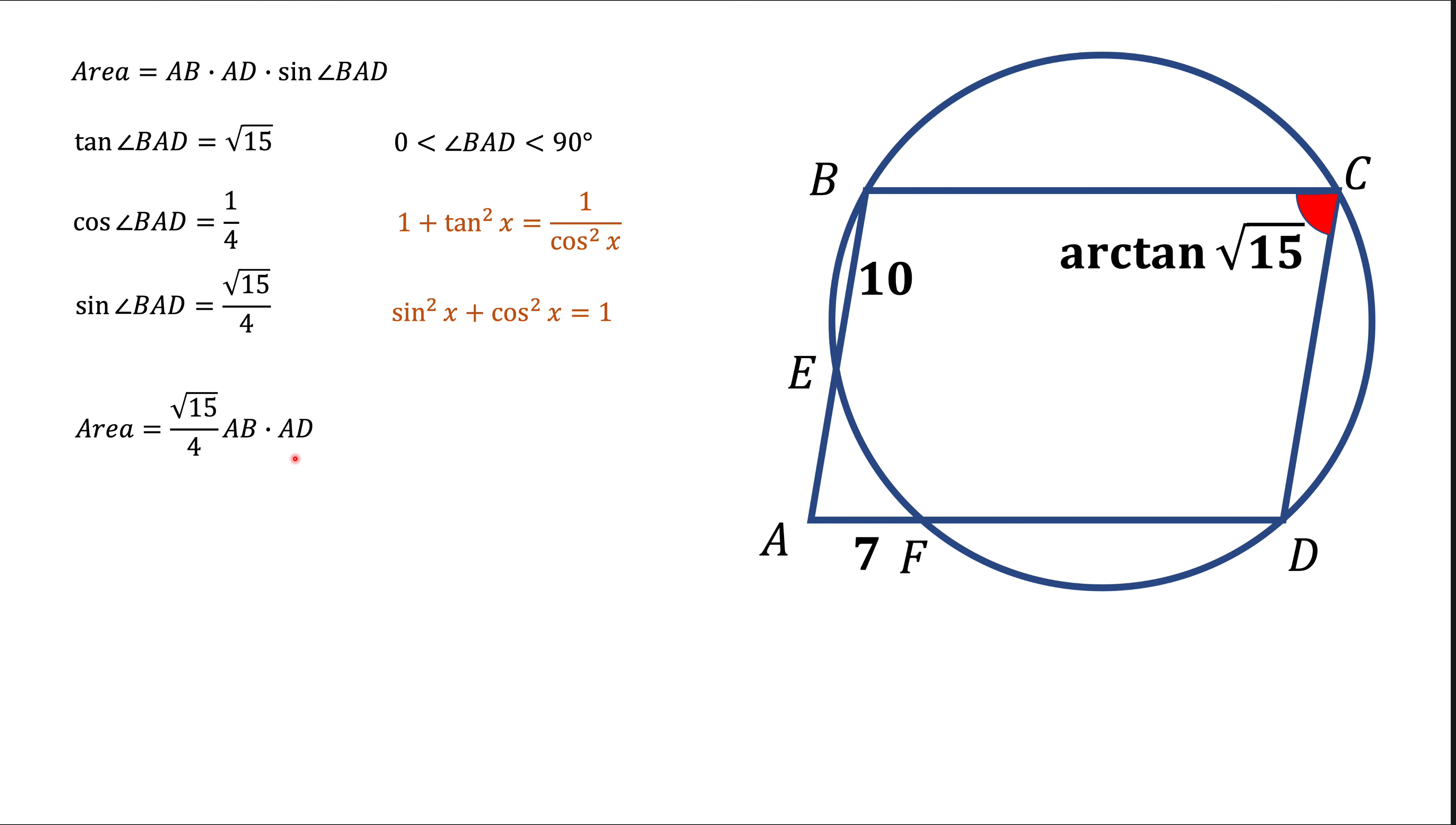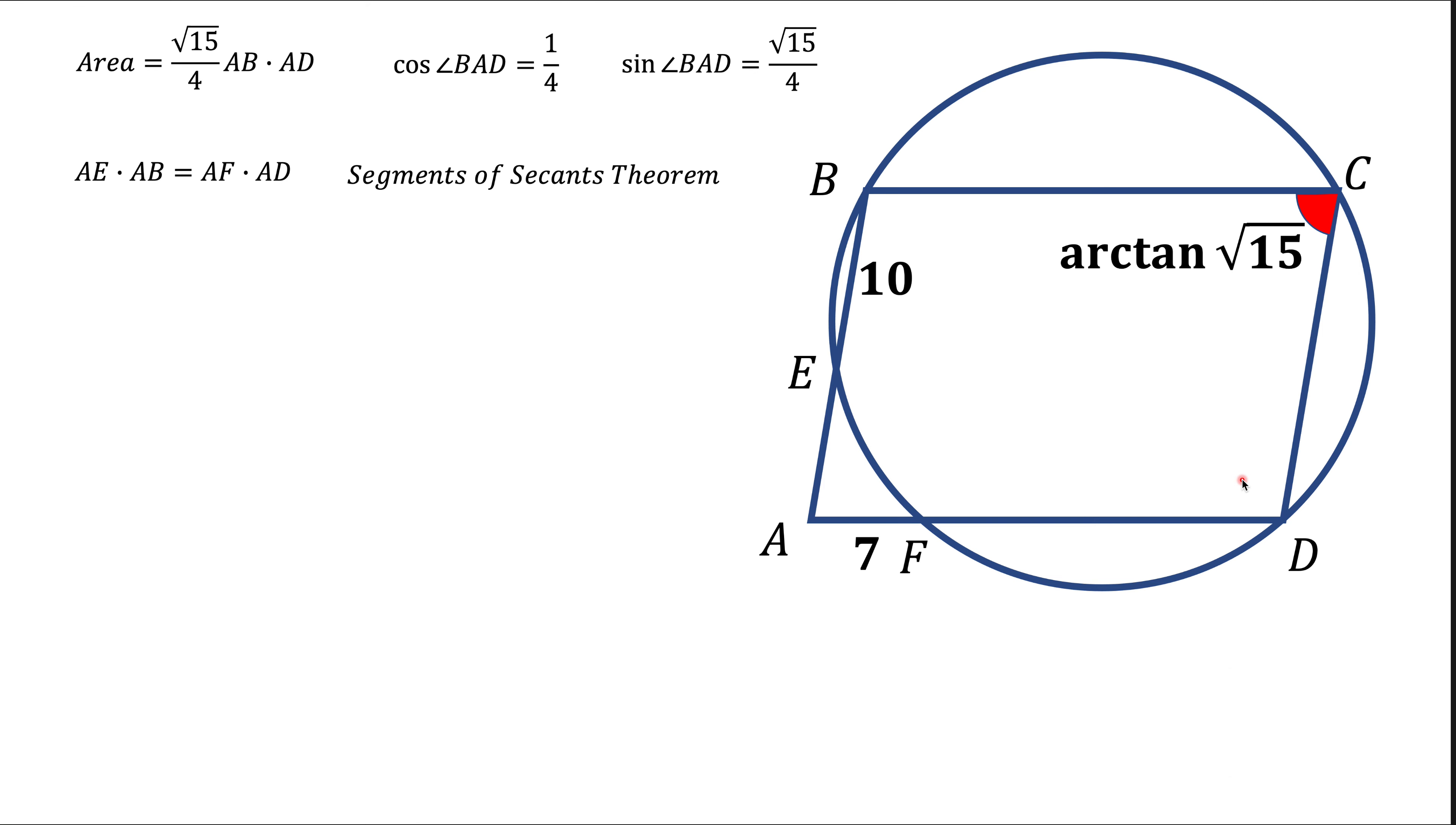Now let's remind ourselves segments of secants theorem. What segment of secants theorem tells us is when we have two secants, like AB here and AD, that intersect with point A, the product of the distances from point A to point E and point B is the same as the product of the distances from A to F and from A to D. And I have a video that discusses this and some other related facts to this in more details, and I highly recommend you to watch that video.